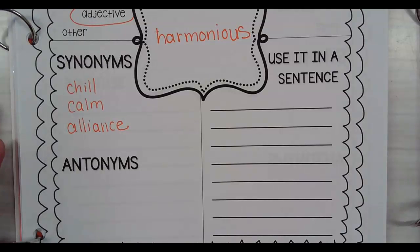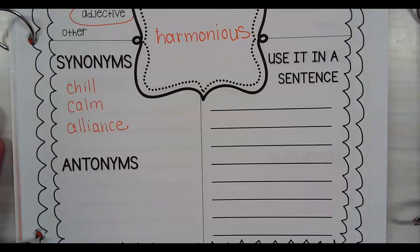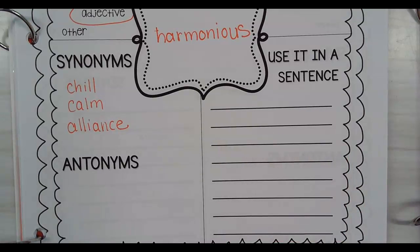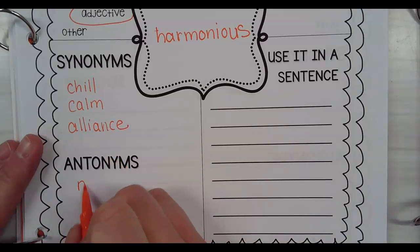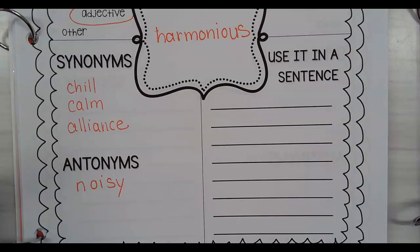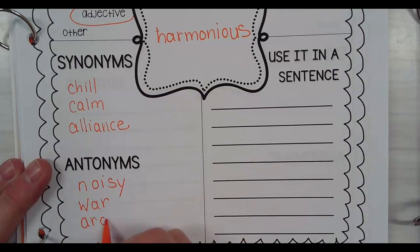We gotta do antonyms now. Antonym. And all my hands went down and then some came back up. Okay, but we're talking about antonyms. What's the opposite of being in agreement or peaceful? Okay, I'll give you noisy, but not being in agreement would be war or argument, arguing, right? War, arguing, or fighting.